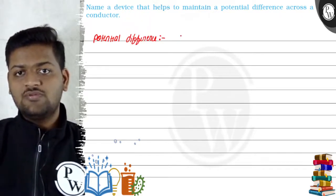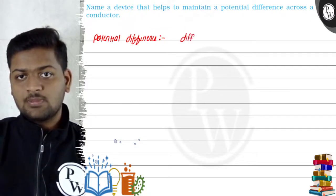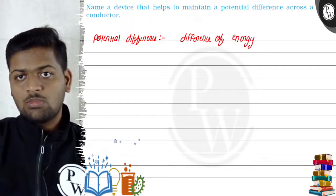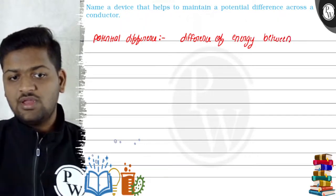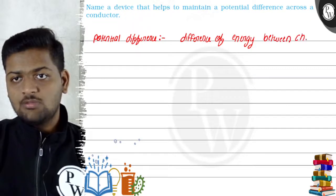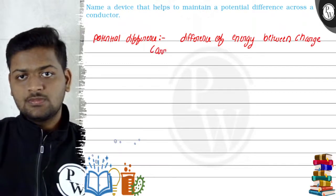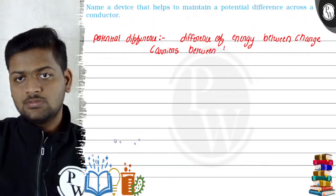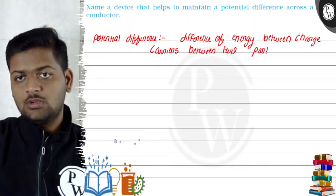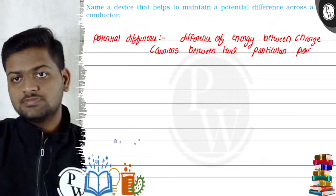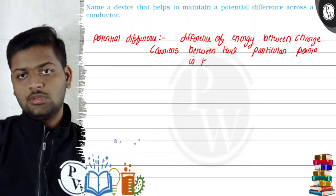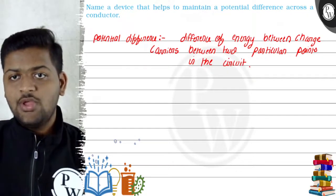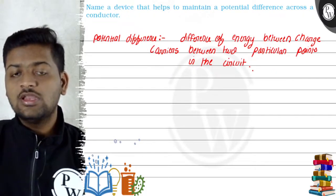So what is potential difference? Potential difference is the difference of energy between charge carriers between two particular points in the circuit — in the whole electric circuit.